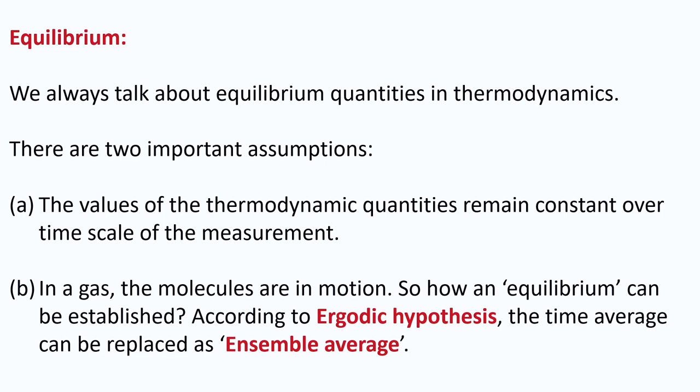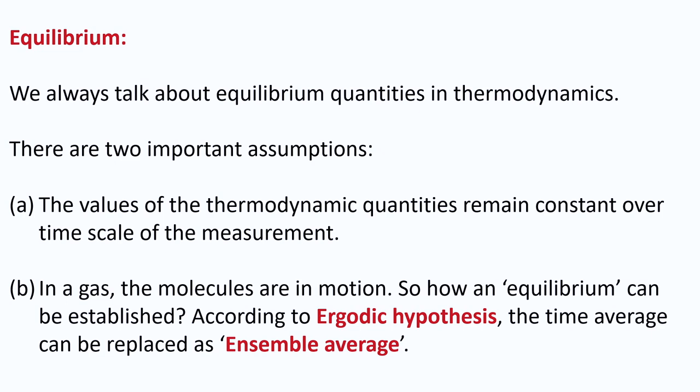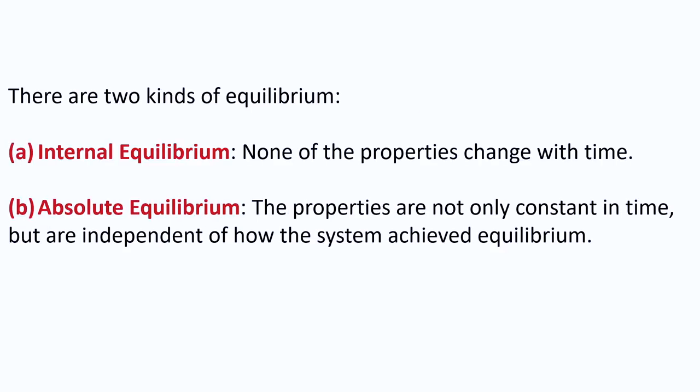In a gas, molecules are in motion, so how can equilibrium be established? According to the ergodic hypothesis, the time average is replaced by the ensemble average, and we can still talk about equilibrium quantities. There are two kinds of equilibrium: internal equilibrium, where none of the properties change with time; and absolute equilibrium, where the properties are not only constant in time but are also independent of how the system came to equilibrium — that is, independent of the path by which equilibrium was achieved.